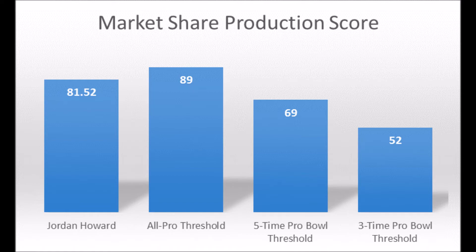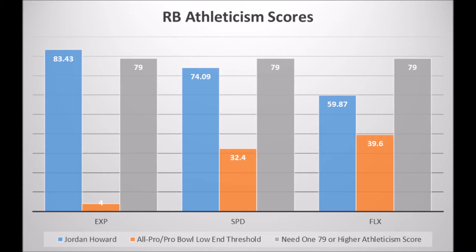Adding to that his athleticism: he had an 83.43 explosive lower body strength score, a 74.309 speed score, and a 50.87 flexibility score. Based on all those numbers, he pretty much hits the minimum threshold for All-Pro and Pro Bowl level outcomes.